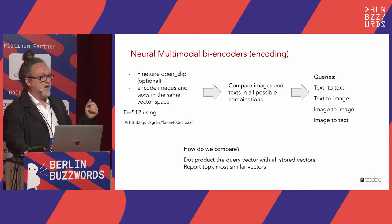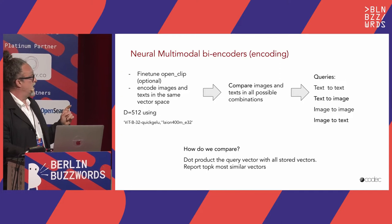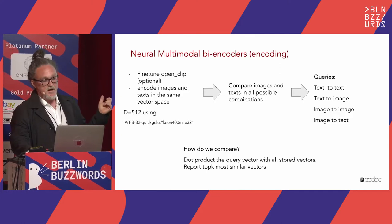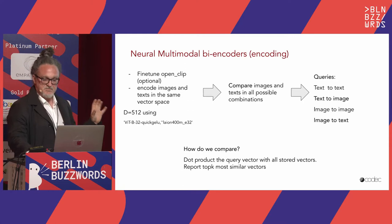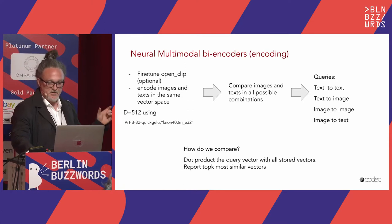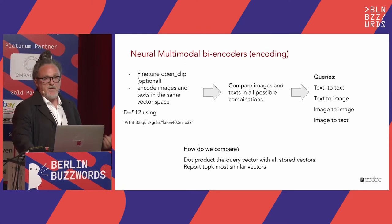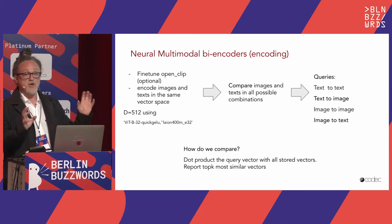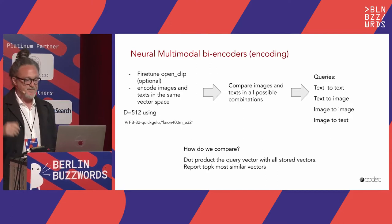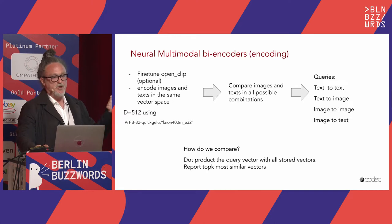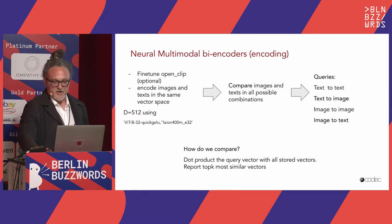In the particular flavor of the model we're using, the dimensionality of the vector space is 512, which is a reasonable vector size. Comparison is typically done via a dot product between the query vector and your entire database, and then you pick the top-k most similar vectors and report them back to the user.